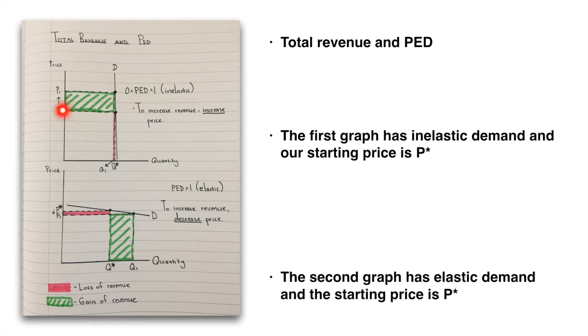But when the price goes up to P1, P1 Q1 becomes our new area for our total revenue, and this green area is our gain in revenue, and this pink area is our loss in revenue. The way I figured that out is that I looked at the new area for P1, Q1, and I looked at how it increased vertically and what we lost horizontally.